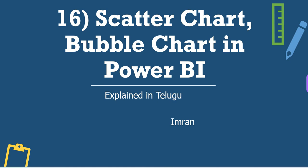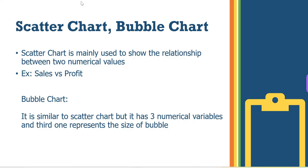By the end of this video, you will understand that Scatter Chart is mainly used to show the relationship between two numerical values. For example, we will compare Sales and Profit.